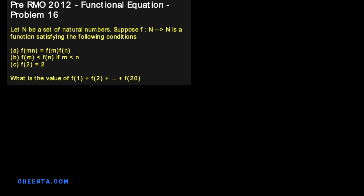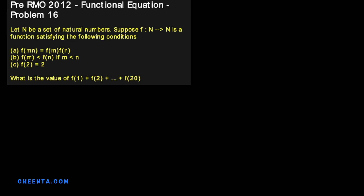Let's look at this problem from pre-RMO 2012. It's a functional equation problem, and if you do not know what that means, that's perfectly all right. The problem says we have a function from natural numbers to natural numbers with certain properties, and we want to know what is f(1) + f(2) + ... + f(20).